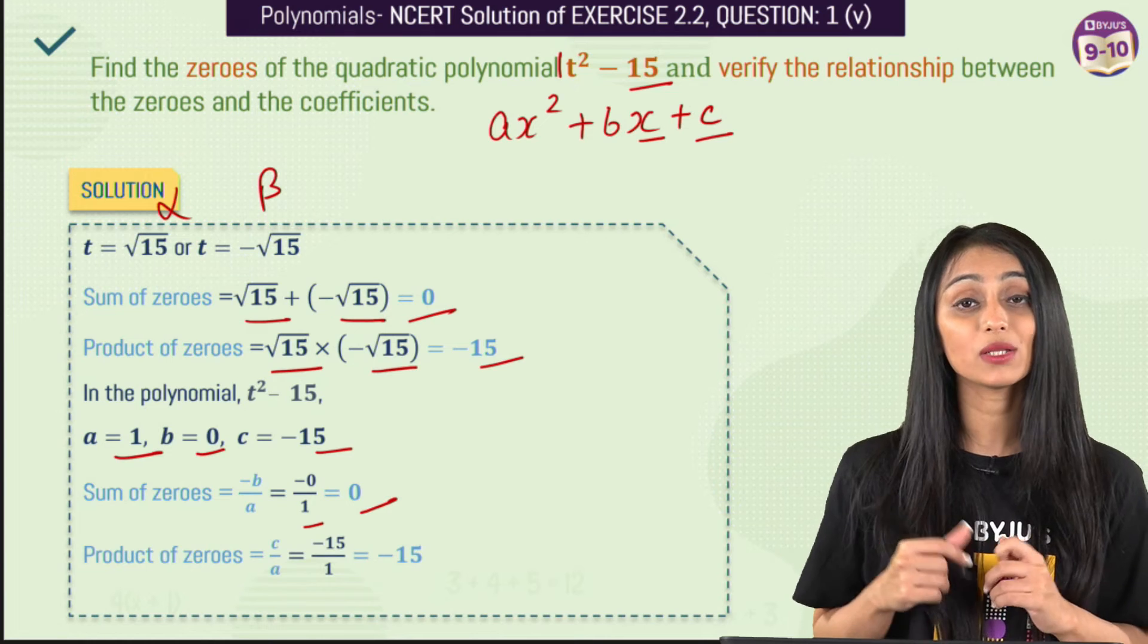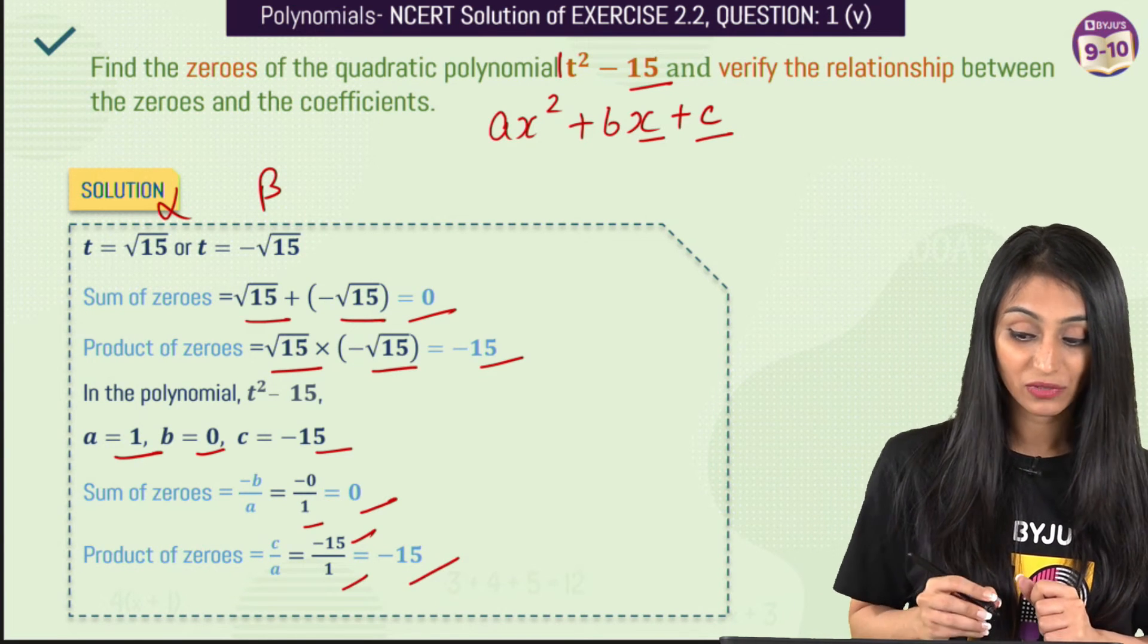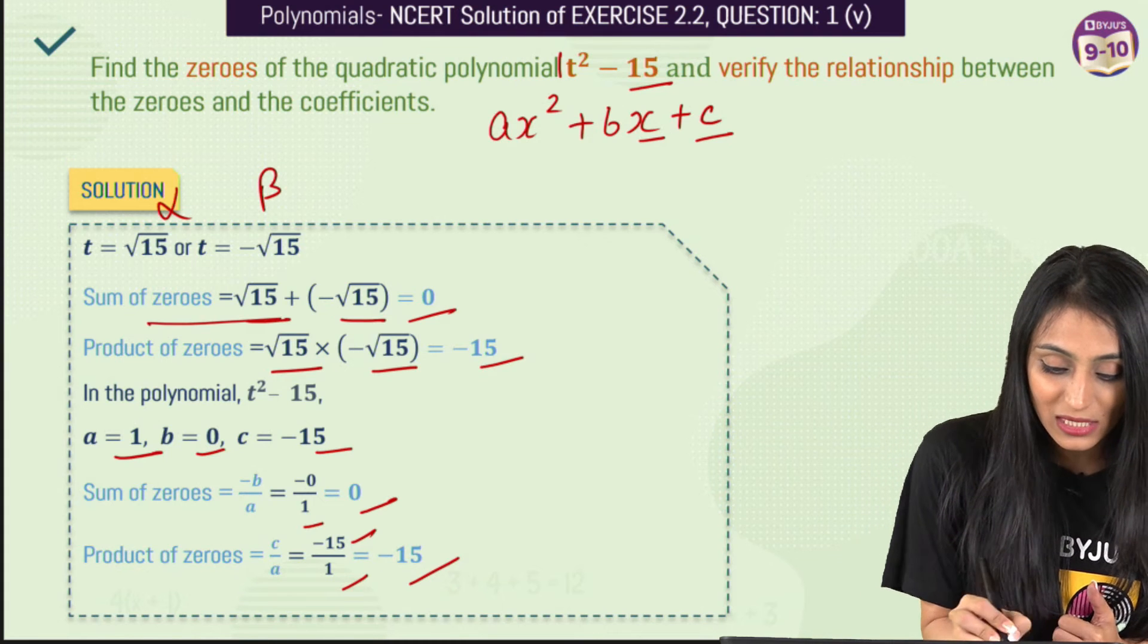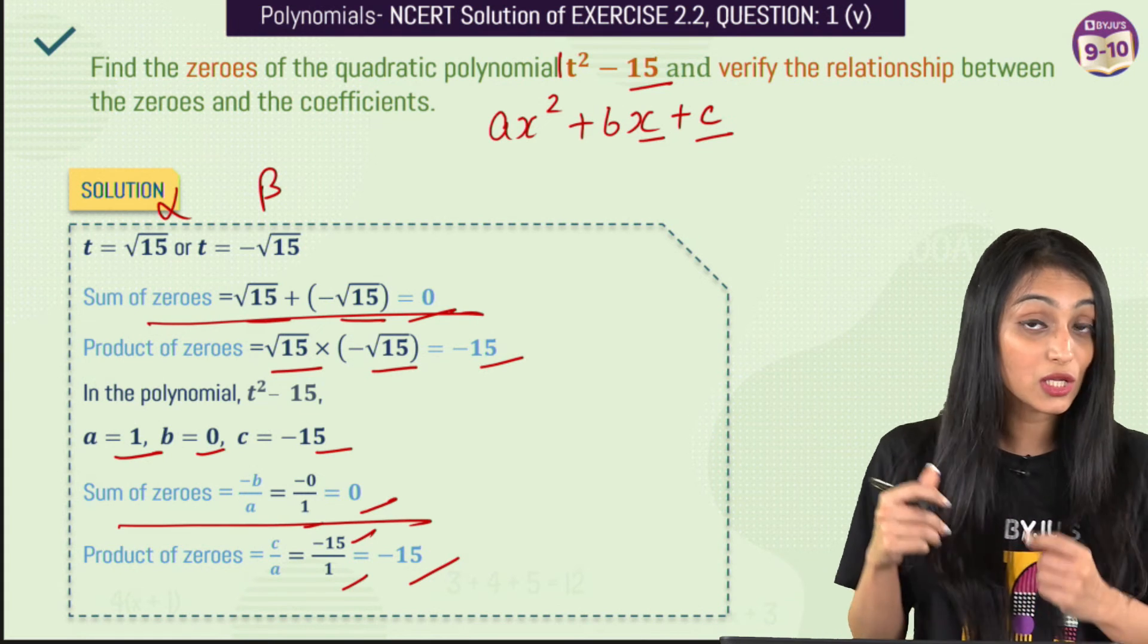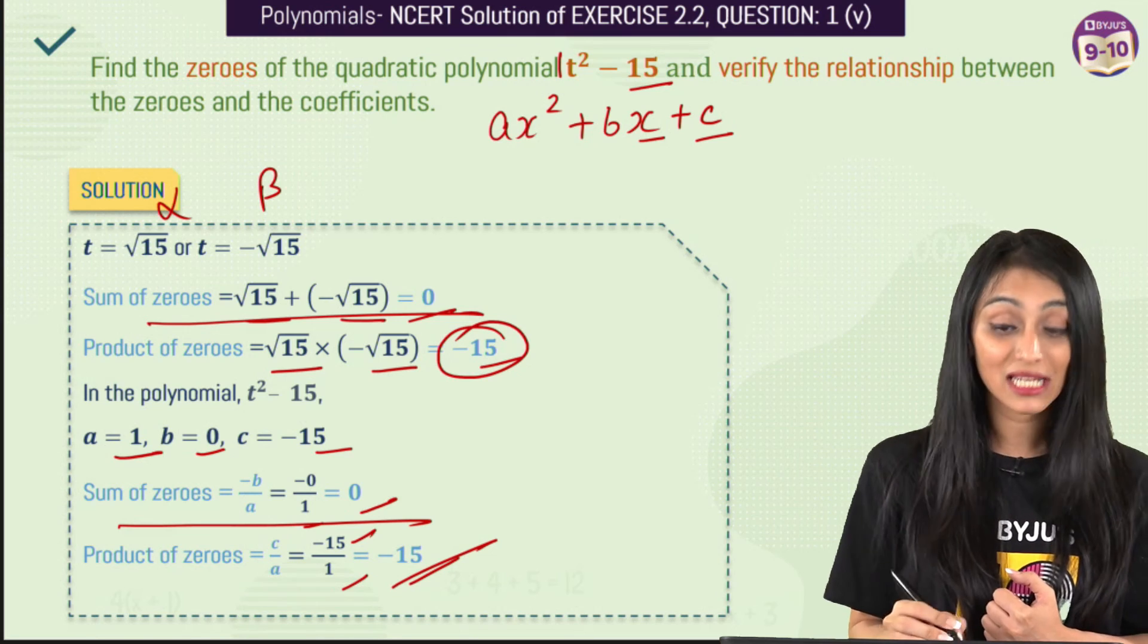For the product of zeros, that's c/a, which is -15/1 = -15. What we see is that the sum of zeros is 0 in both cases, and the product of zeros is -15 in both cases.